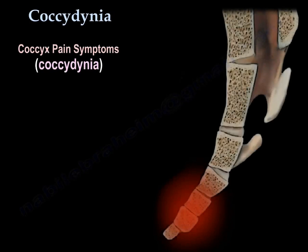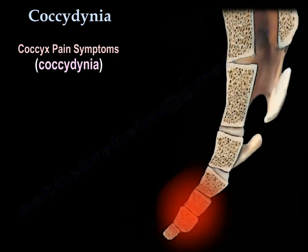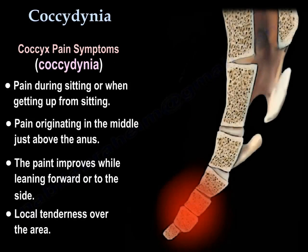Coccyx pain symptoms include pain during sitting or when getting up from sitting, and pain originating in the middle just above the anus. The pain improves while leaning forward or to the side, and there is local tenderness over the area.